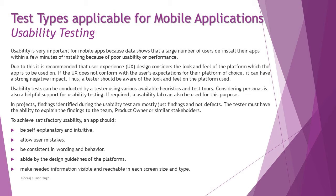In projects, findings identified during a usability test are mostly just findings and not defects, because it depends on individual perception. For one person it could be acceptable, while another may disagree. These findings are not declared as defects, rather just findings. It is up to the organization based on a poll of users. The tester must have the ability to explain the findings to the team so they can be decided upon and taken into consideration for implementation. Product owner or similar stakeholders will also be a part of it.